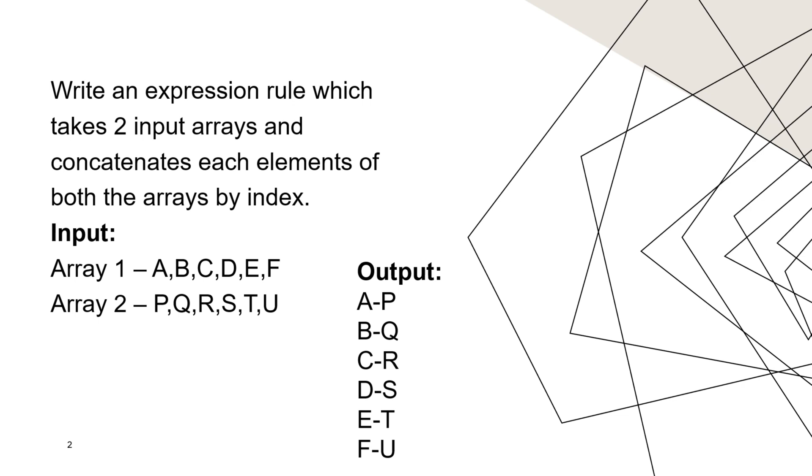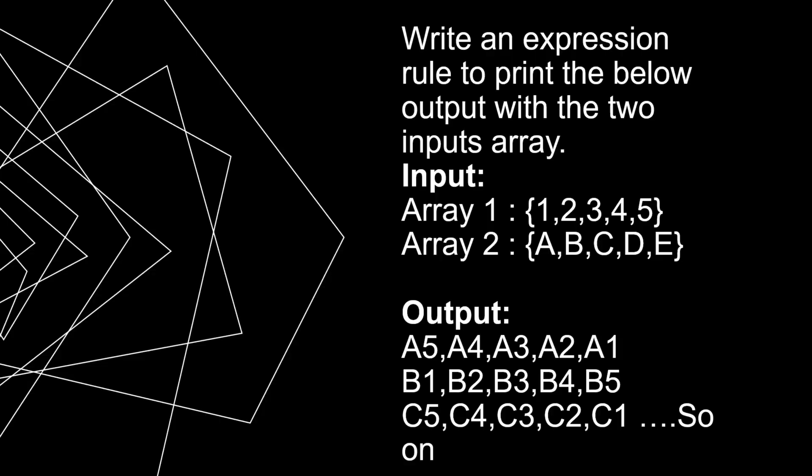Moving on to our next question: we need to write an expression rule to print a specific output using two input arrays. Input array 1 is 1, 2, 3, 4, 5 and input array 2 is a, b, c, d, e. The output is a bit complicated — the first element of array 2 is mapped with array 1 in reverse order: a-5, a-4, a-3, a-2, a-1.